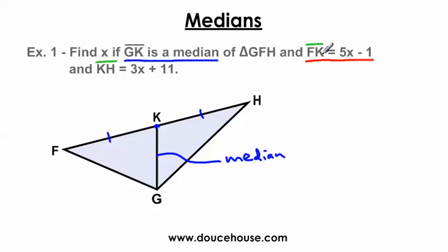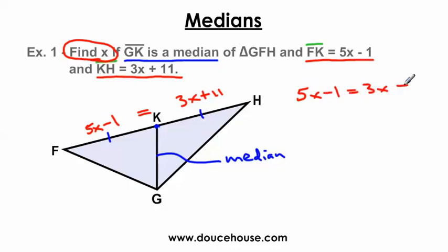We know that segment FK is equal to 5x minus 1. So I'm going to put 5x minus 1 here. We also know that segment KH is equal to 3x plus 11. And my goal is to eventually find x. Well, how can I do that? Well, I know that segment FK is equal to or congruent to segment KH. And so I can just set these segments equal to each other to find x. This is as hard as I'm going to make these problems for my students. And so this is likely going to be something that you're going to see given from one of your teachers. And so let me solve for x. Subtract 3x from both sides.